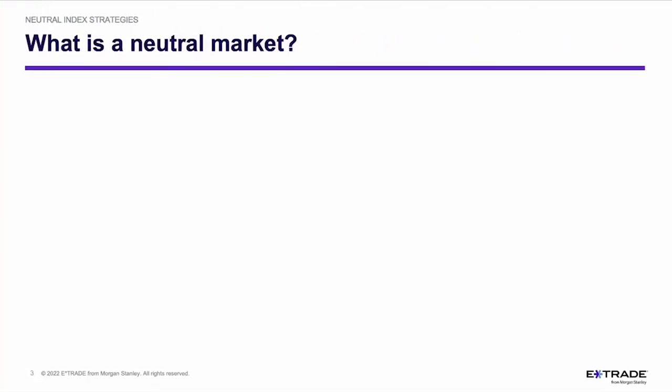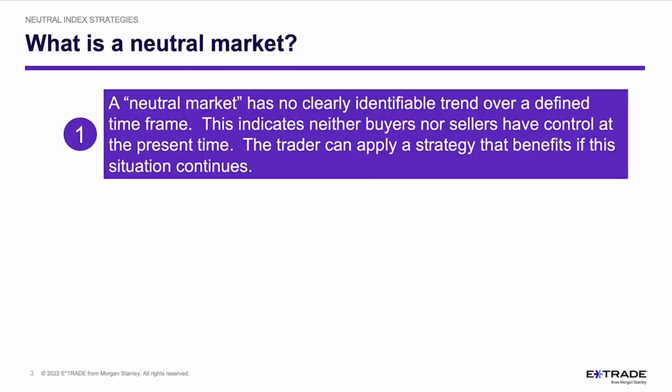Before we can get into neutral index strategies, it's important that we first define what a neutral market is. A neutral market has no clearly identifiable trend over a defined timeframe. This indicates that neither buyers nor sellers have control of the market at the present time. A trader can apply a strategy that benefits if the situation continues.